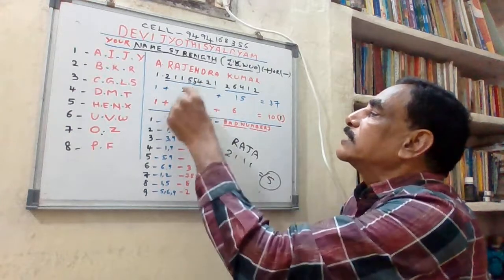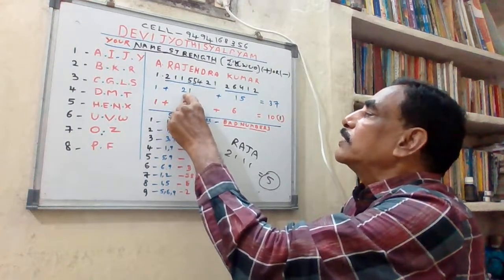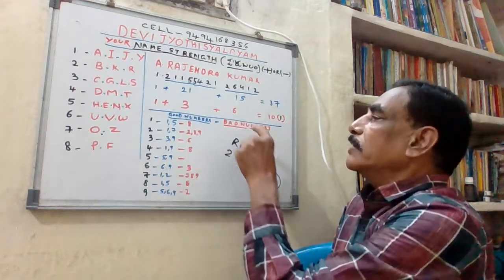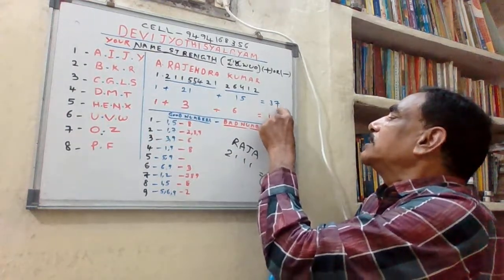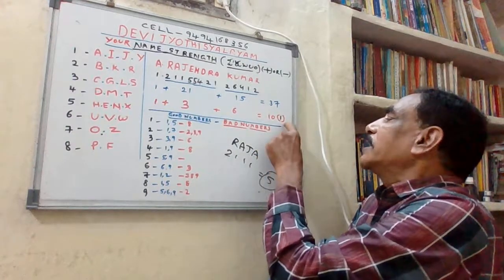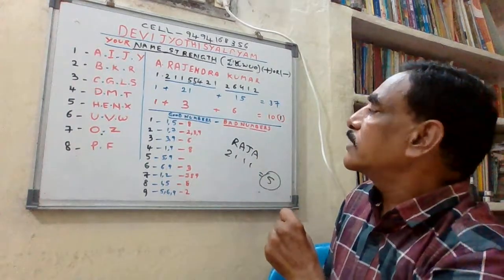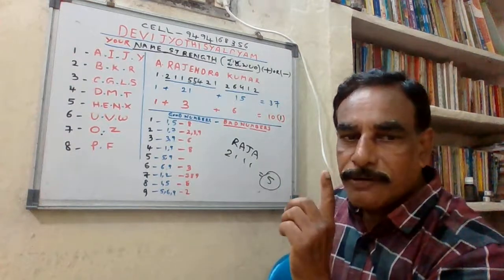Rajendra totals 21, Kumar totals 15, and A is 1. Total is 37. 37 reduces to 10, which reduces to 1. So my name strength is 1.